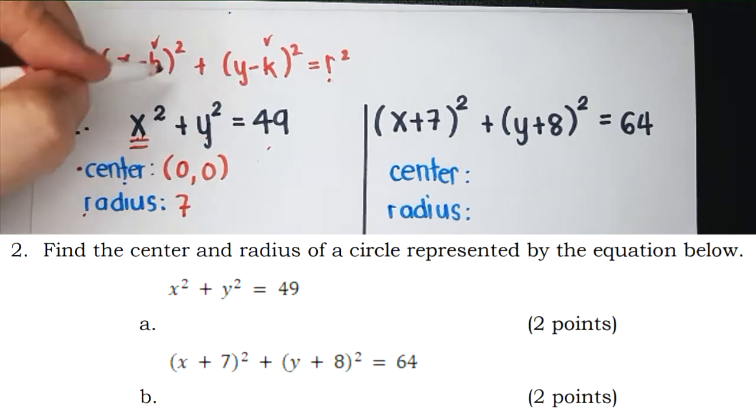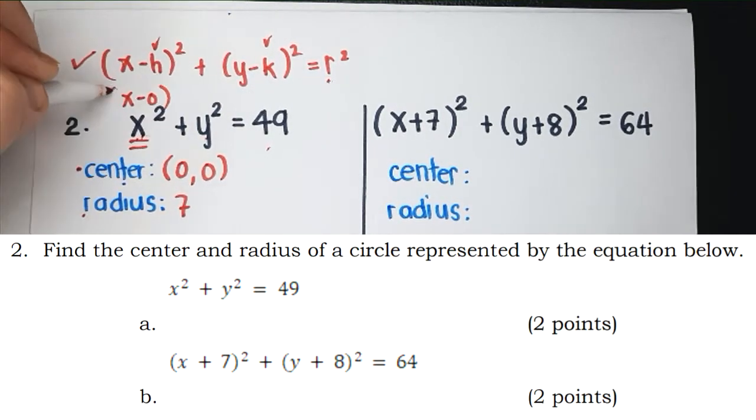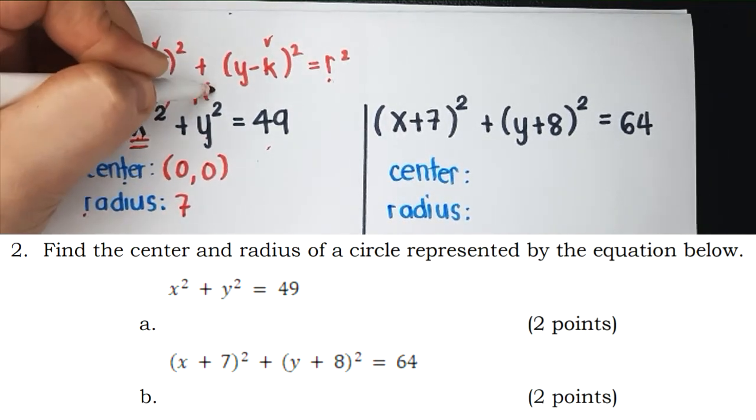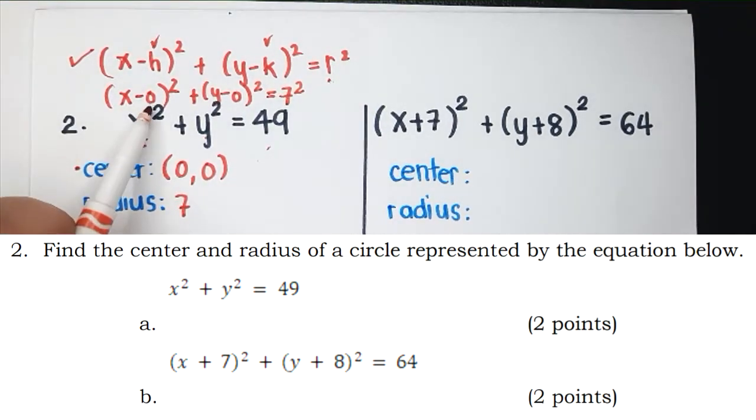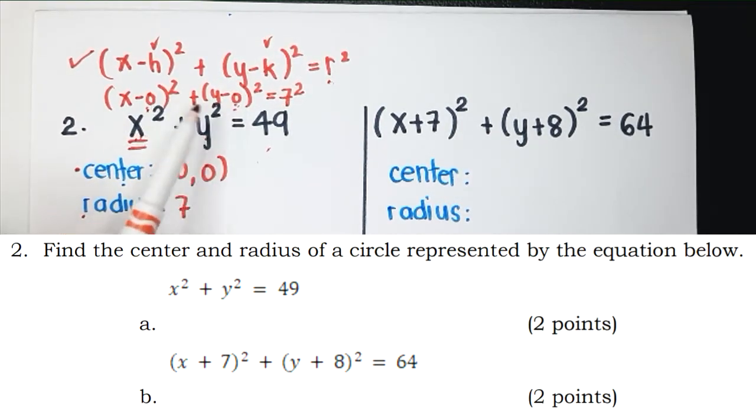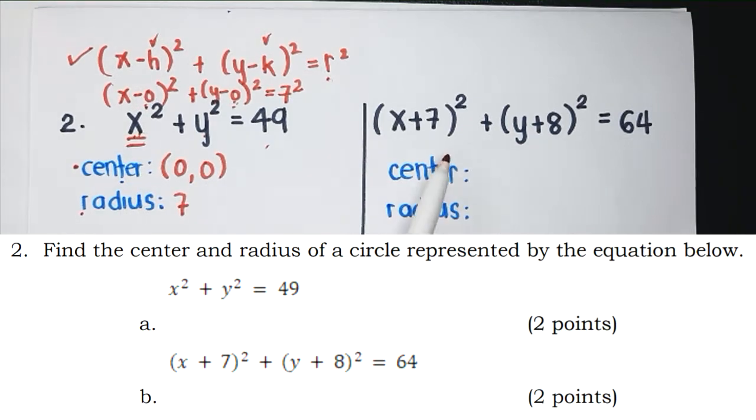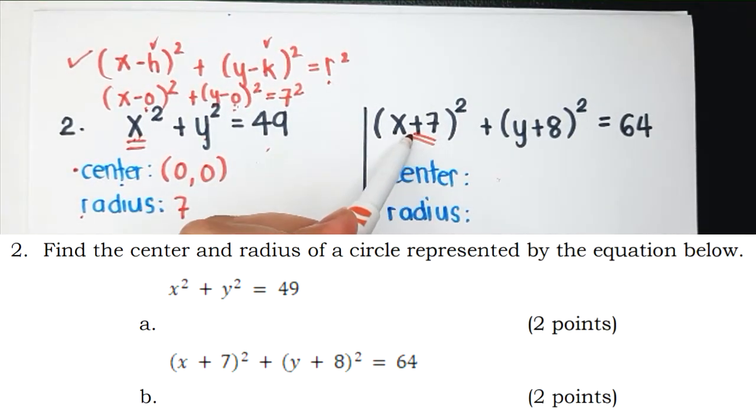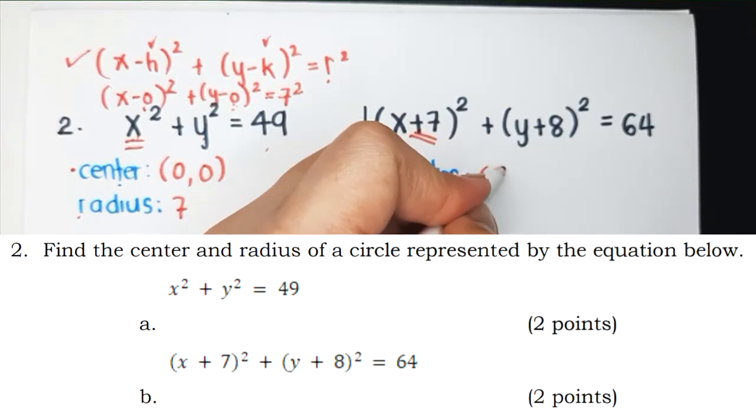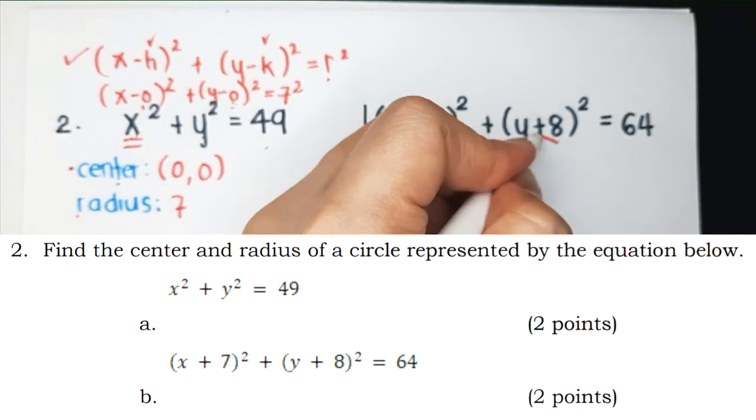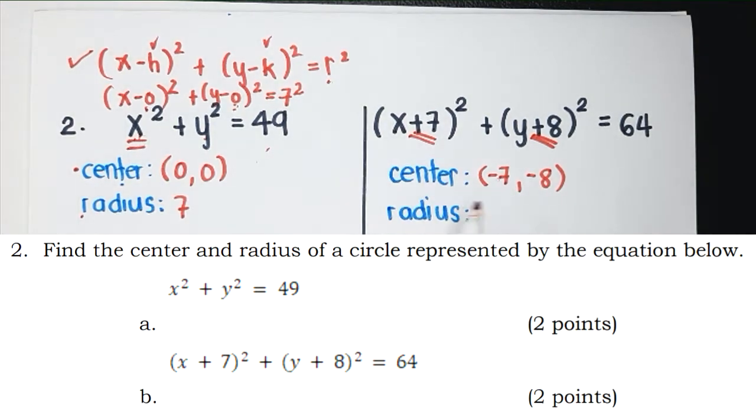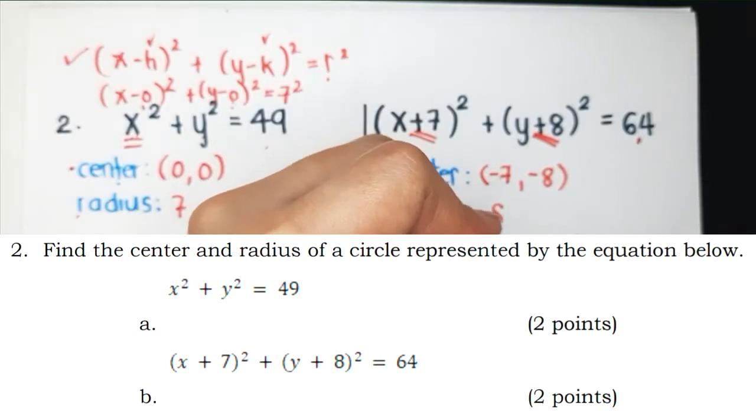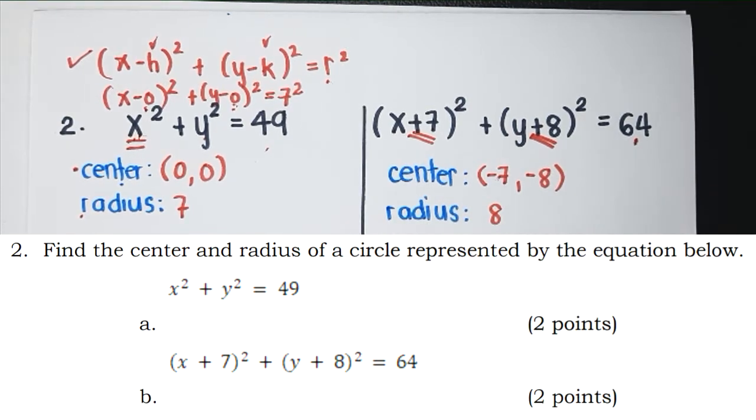The coordinates of the origin are 0, 0. This is like x minus 0 squared plus y minus 0 squared equals 7 squared. That's why the center lies at the origin. For this one, when you see positive here, you consider the negative. Positive 8, you consider negative 8. That's the center. What about the radius? It's not 64. It is the positive square root of 64, which is 8.